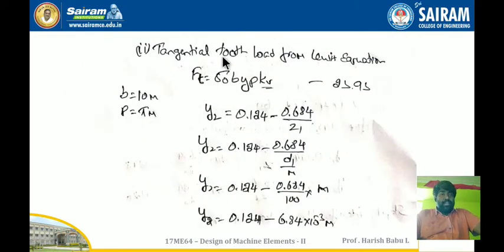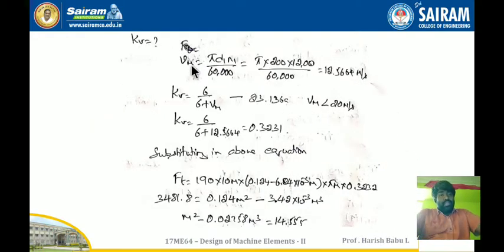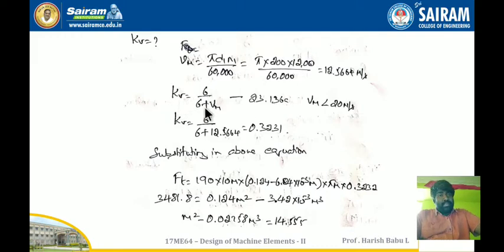The second step uses the Lewis equation: FT = σ₀ × B × Y × P × KV. Since Y was calculated by assuming Z, I substitute Z in terms of D/M, so Y = 0.124 − 6.84 × 10⁻³ × M. I assume face width B = 10M and P = π × M. The pitch line velocity Vm = π × D1 × N1 / 60000 = π × 200 × 1200 / 60000 = 12.566 m/s. Since Vm is between 12.5 and 20 m/s, I use equation 23.136A, giving velocity factor KV = 6/(6 + Vm) = 0.3231.